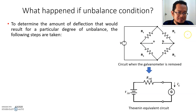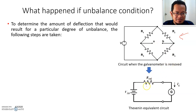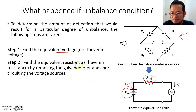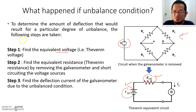As you can see on the right side, this is a picture when the galvanometer is removed. When you talk about Thevenin's equivalent, you are finding the Thevenin's voltage and Thevenin's resistance. The first step is to find the Thevenin's voltage. After that, you find the equivalent Thevenin's resistance by removing the galvanometer and short-circuiting the voltage source. Finally, you use both pieces of information from step one and step two to find the deflection current of the galvanometer due to the unbalanced condition.